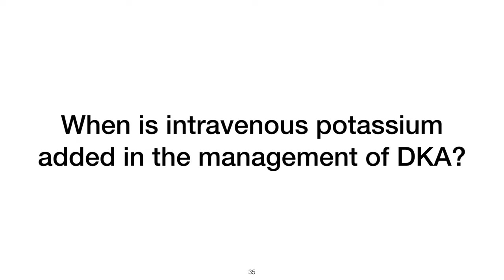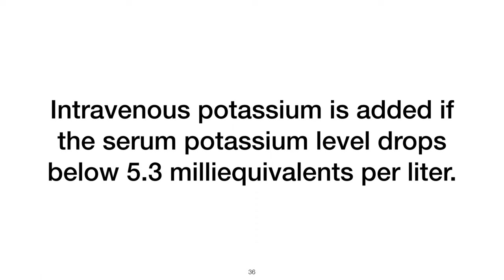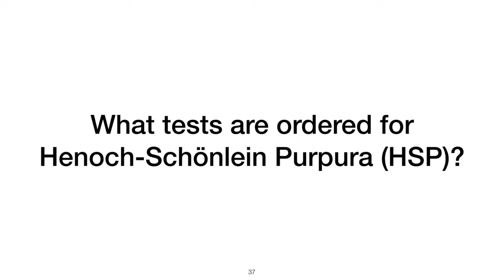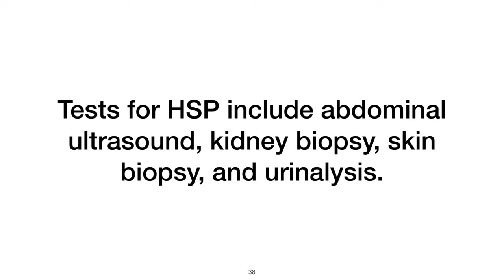When is intravenous potassium added in the management of DKA? Intravenous potassium is added if the serum potassium level drops below 5.3 mEq per liter. What tests are ordered for Henoch-Schönlein Purpura (HSP)? Tests for HSP include abdominal ultrasound, kidney biopsy, skin biopsy, and urinalysis.